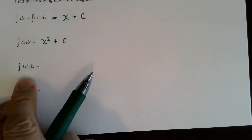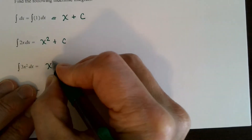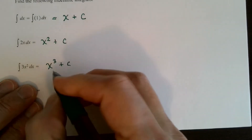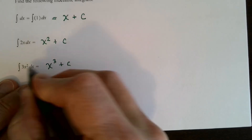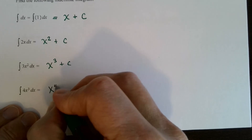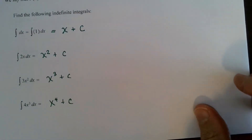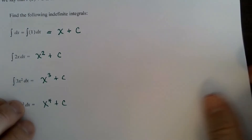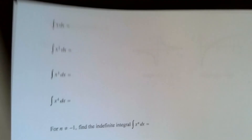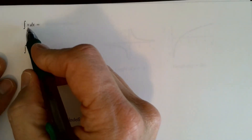The anti-derivative of 3x squared is x cubed plus c, because the derivative of x cubed — bring the 3 down, subtract 1 — gives 3x squared. The anti-derivative of 4x cubed is x to the 4th. You can see a pattern developing. What about the anti-derivative of x alone?